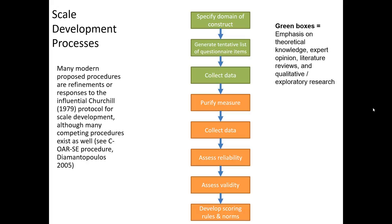Then, based on expert opinion, qualitative research with consumers, focus groups, and literature reviews, you may start to reduce these items down to a more manageable set. Once you've reduced this set of questions down to a more manageable set, you'll collect some preliminary data — that's step four, where it says purify measure. At this stage, a variety of statistical tools — those beyond the scope of today's class — can be utilized to help you identify which measurement items contain promise and which are unlikely to be useful for your final scale. Exploratory factor analysis, or EFA, is likely the most common procedure used during this stage.